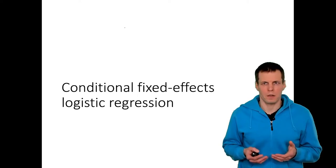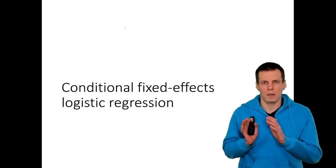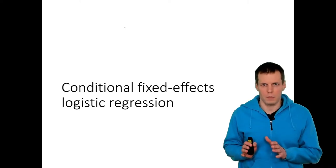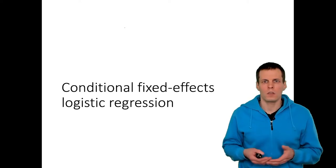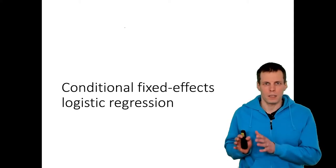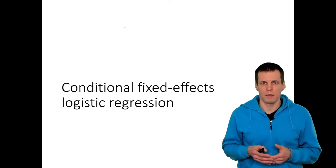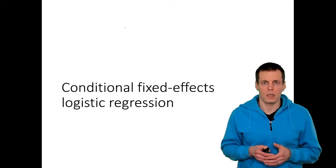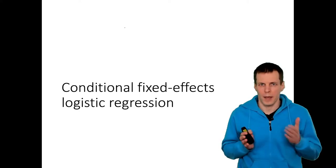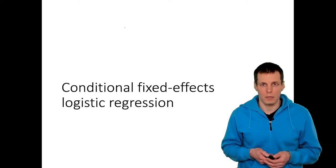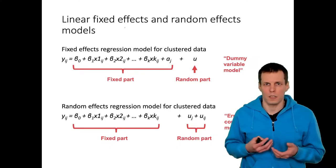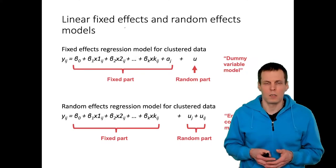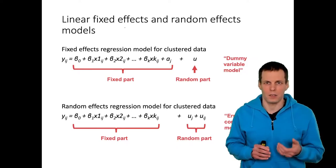GLM models with fixed effects are challenging to estimate, and many GLM models with fixed effects can't even be estimated consistently. Conditional logistic regression is one workaround to the problem that fixed effects in a logistic regression simply can't be estimated. These models are often used in case-control selection studies and sometimes in panel datasets where the dependent variable is binary. Let's first look at what problem conditional fixed effects logistic regression addresses.